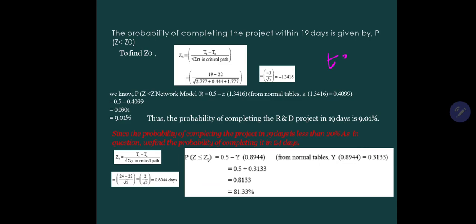As T is given 22 days, we took 19, we cannot do this. For another example, we will take 24 days, two days forward. For 24 days, we will calculate, following the same procedure: 24 minus 22 divided by under root of 5, so 0.8944 days. From the normal table, we calculate this value. 0.5 plus this equals 81.33 percent. The completion of project in 24 days, the probability here is 81.33 percent, while in 19 days it was only 9 percent.